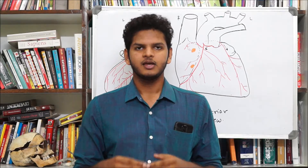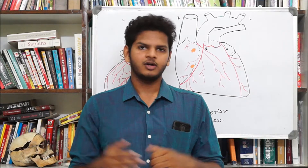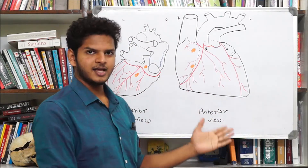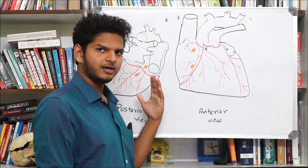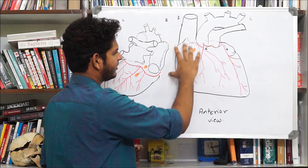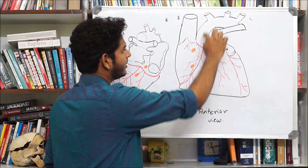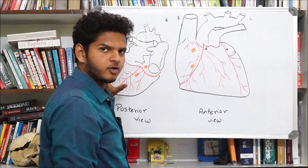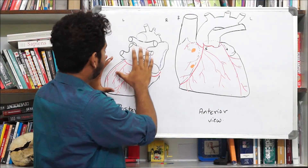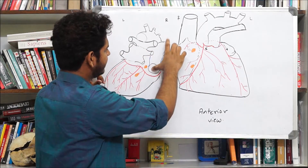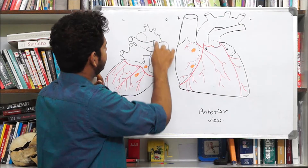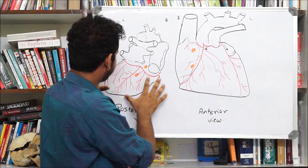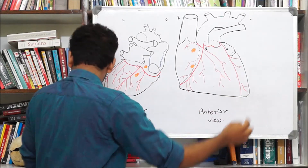There are two coronary arteries: the right and the left. Looking at the diagram, this is the anterior view of the heart. We can identify the SVC, IVC, right atrium, right ventricle, left ventricle, left auricle, arch of aorta, pulmonary trunk, and the right and left pulmonary arteries. In the posterior view, the base of the heart is formed by the left and right atria, with the IVC, SVC, arch of aorta, and pulmonary trunk visible.